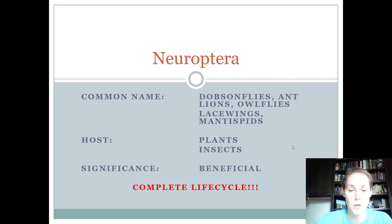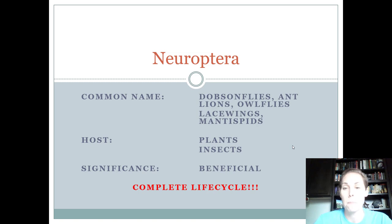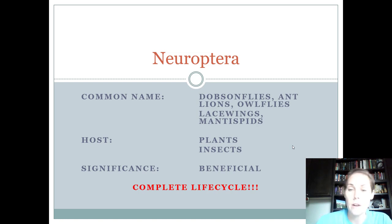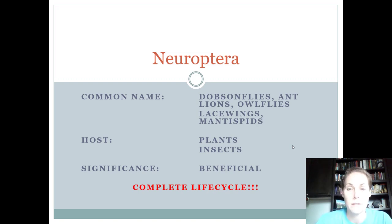Now we're going to move on to Neuroptera. Neuroptera is the first order we've looked at where you have a complete life cycle. Neuropterans include Dobson flies — new for 2018-2019 because Dobson flies used to be their own order but now taxonomists agree they're in Neuroptera — as well as antlions, owl flies, lacewings, and mantispids. The host for these is either plants or other insects, and all of them are beneficial with a complete life cycle.